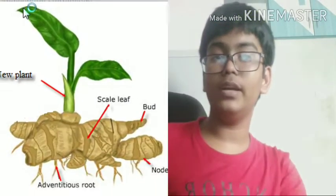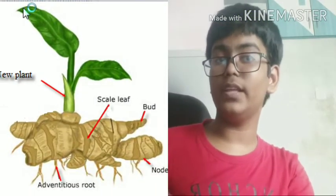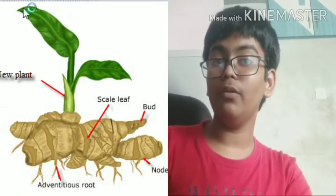The axillary buds have now dried up, so they appear brown in colour, otherwise they are green. You have a diagram on the screen as well. Now let us go to the next type of stem reproduction, which is potato.